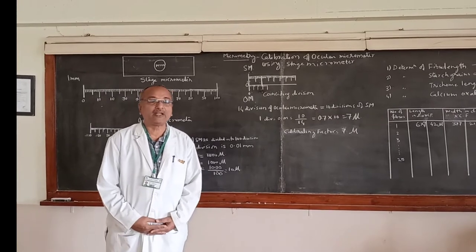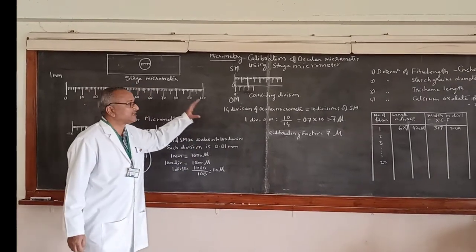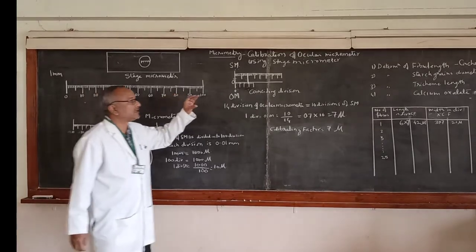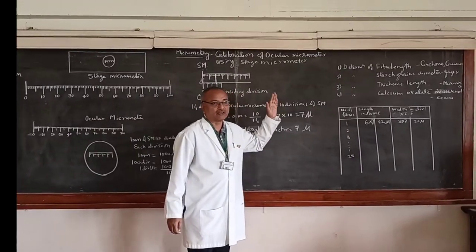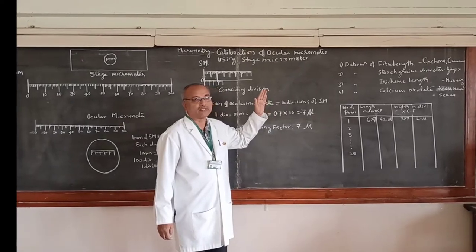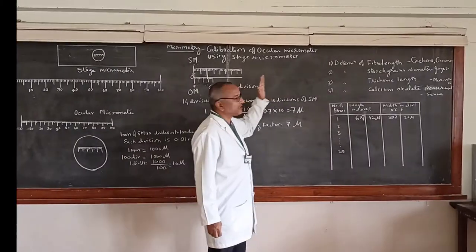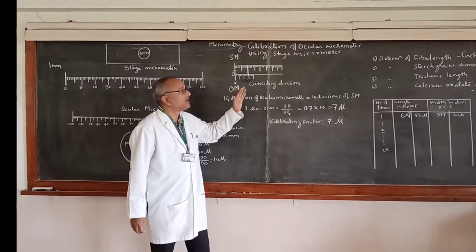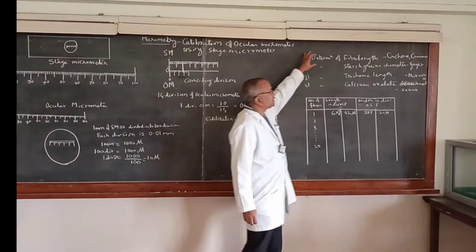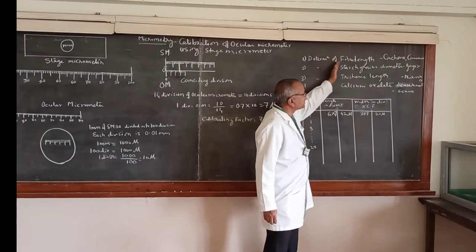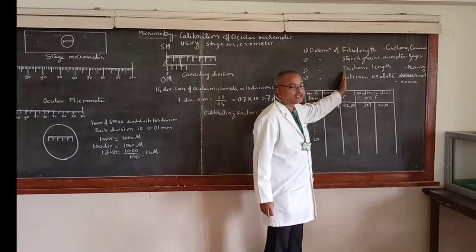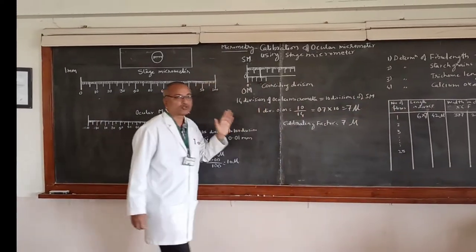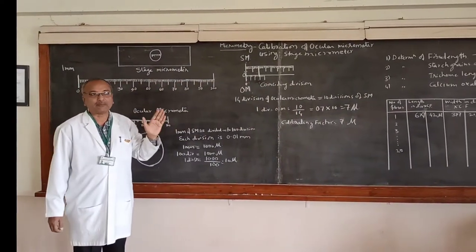This calibration is required for measuring the micro units in plant powder beds. We need to cover stage micrometers as well as ocular micrometers — that is the calibration process. We measure the fiber length, beam diameter, and calcium crystals using the ocular micrometer itself. So, why is the calibration required?